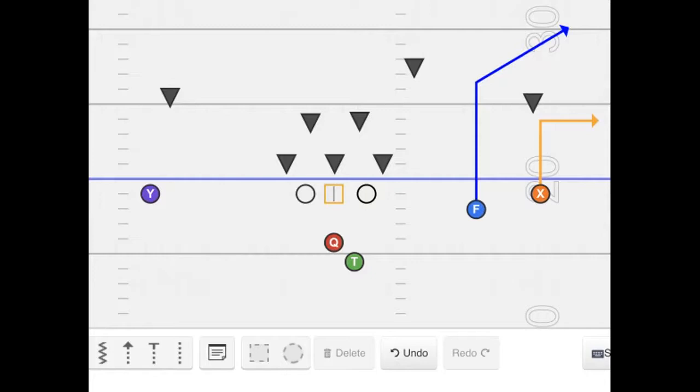And then the third receiver's route here on the back side, the Y, can vary. It can basically be anything. Some sort of crossing route is what I would say. That way it would be an option or a third option in the progression. It could be like a skinny post, a true Y crossing route, a dig across the field, or even a shallow cross. Anything coming across the field. That way your quarterback goes through his progressions one, two, and then the backside guy coming across the middle. His eyes are always in one area rather than flip-flopping across the field.